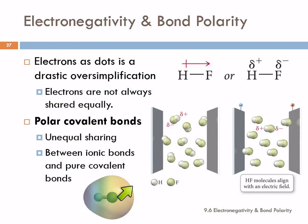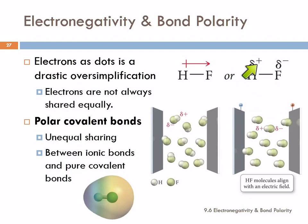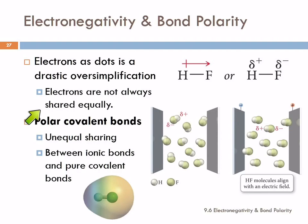The electrons spend more time around the fluorine than around the hydrogen, and that causes a lopsided charge. One end is partially negative and one end is partially positive. This is the Greek letter delta — it looks like a letter D with a posture problem — and we use that to represent a partial charge. This is not an ionic compound; this is a partial charge. It's less than one. So there's a partial positive charge on one side and a partial negative charge on the other. When we put that in an electric field, the negative end is attracted to the positive electrode and the positive end is attracted to the negative electrode. We call this a polar covalent bond.